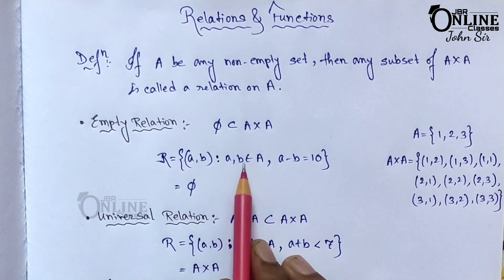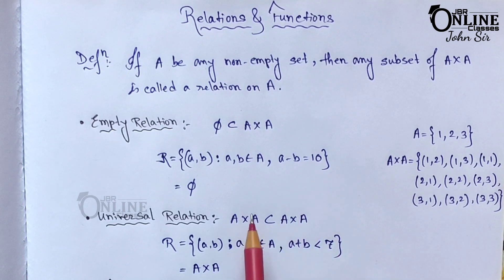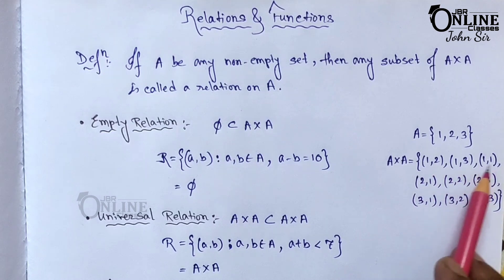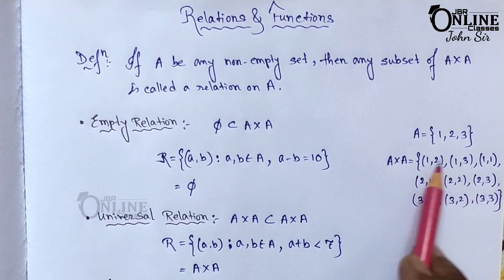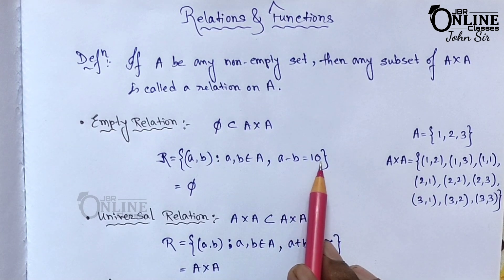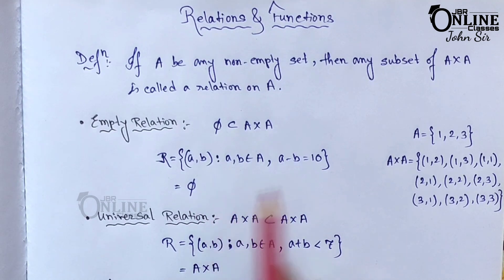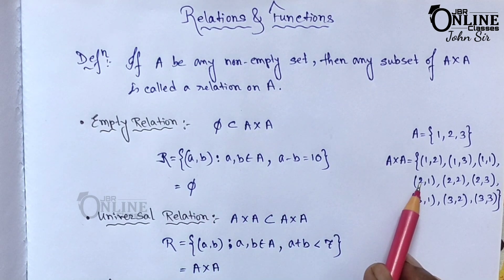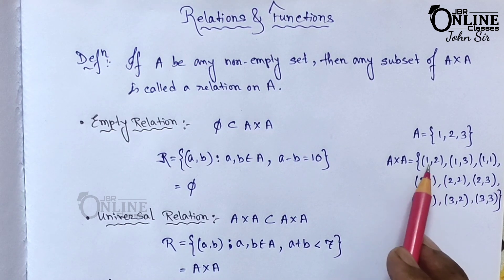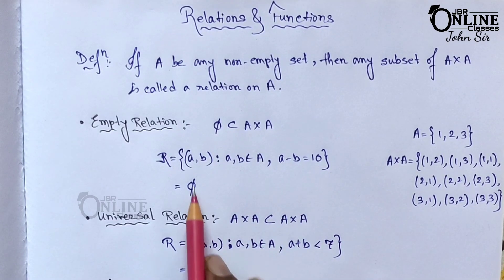Suppose a relation R = {(a, b) : a, b ∈ A and a − b = 10}. Now with A = {1, 2, 3}, look at the ordered pairs: a − b gives values like 3−3=0, 2−2=0, 2−1=1, 1−2=−1 — none equal 10. So you cannot find any pair where a − b = 10, which means it is an empty relation.